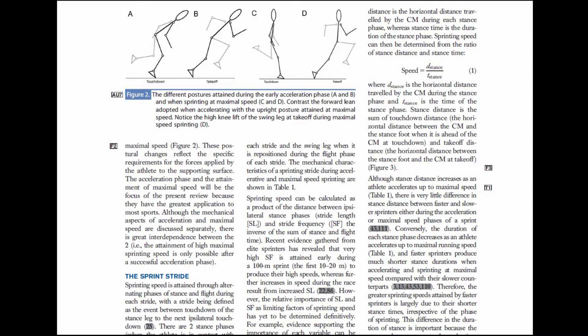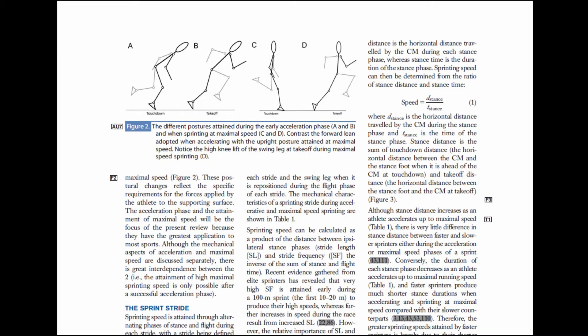We were able to identify specific mechanical limitations to the acceleration phase of sprinting, as well as to the maximal speed phase of sprinting. Over here, we have an image showing the typical posture adopted when the athlete's accelerating. That posture is adopted because the mechanical limitation to acceleration sprinting appears to be the ability of the athlete to produce a forward-directed ground reaction force.